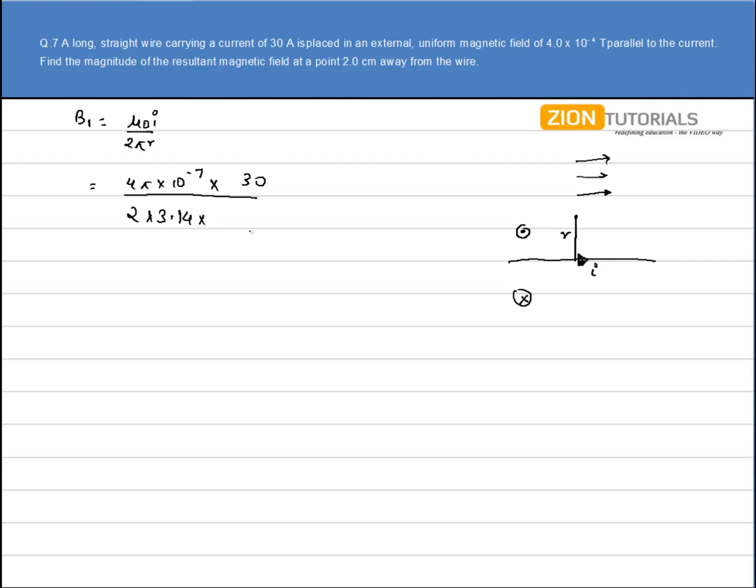Here r is a point at which we have to calculate the magnetic field. It is given as 2 cm or 0.02 meter. On solving this I get the value of magnetic field as 3×10^-4 tesla.